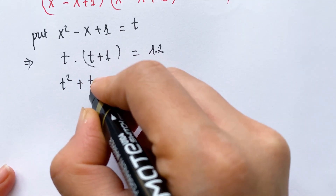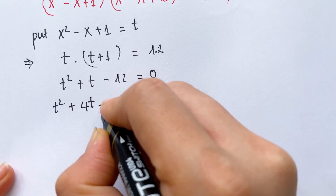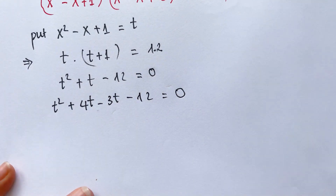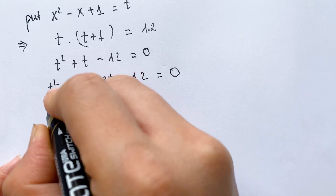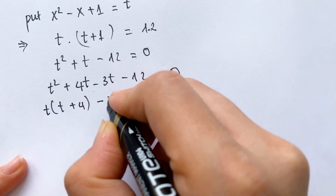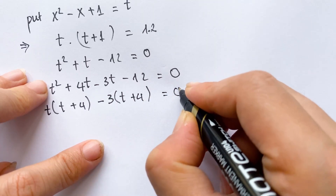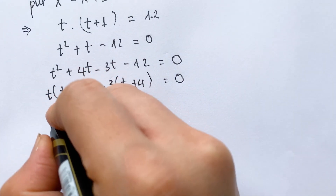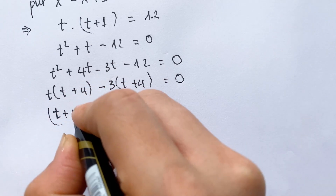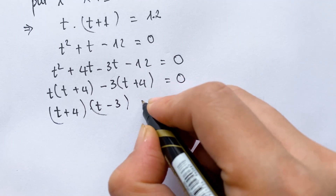We can break this down: t squared plus t equals 4t minus 3t minus 12 equals zero. Then t is a common factor: t times t plus 4, minus 3 times t plus 4 equals zero. So t plus 4 is a common factor, giving us t plus 4 times t minus 3.